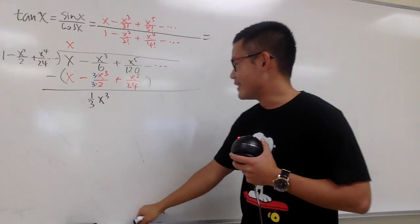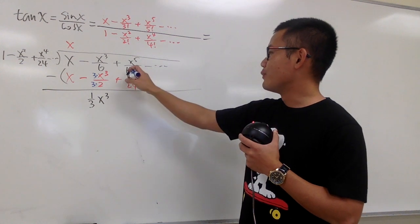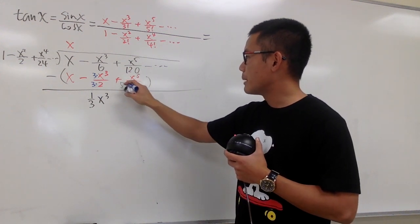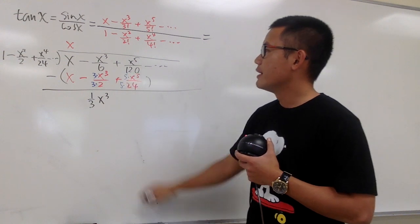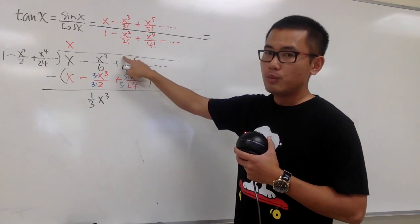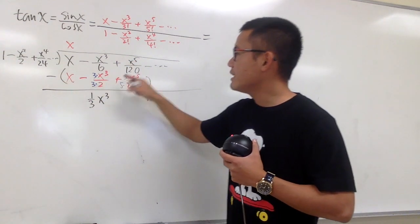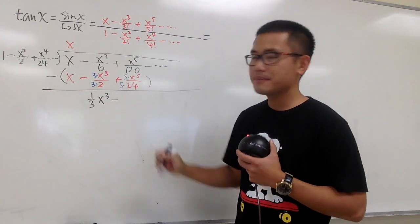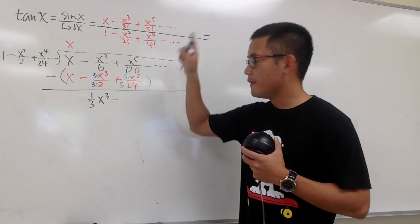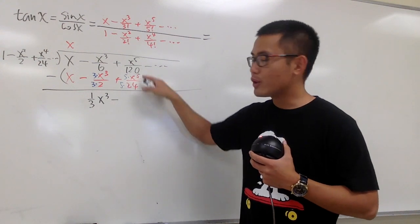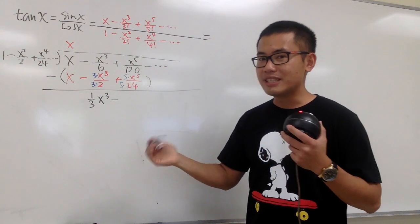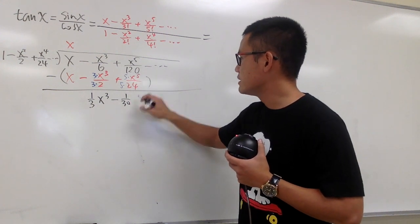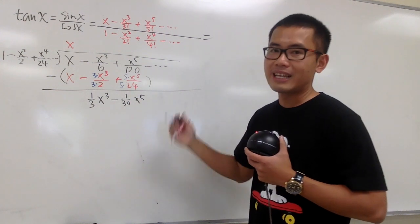For the x to the fifth power term, we have 120 on the denominator here and 24 here. Multiply by 5 and 5 to get a common denominator. This gives us 1 minus 5, which is negative 4. Focusing on 4 over 120, that's the same as 1 over 30. So we have minus 1 over 30 for the x to the fifth power term.